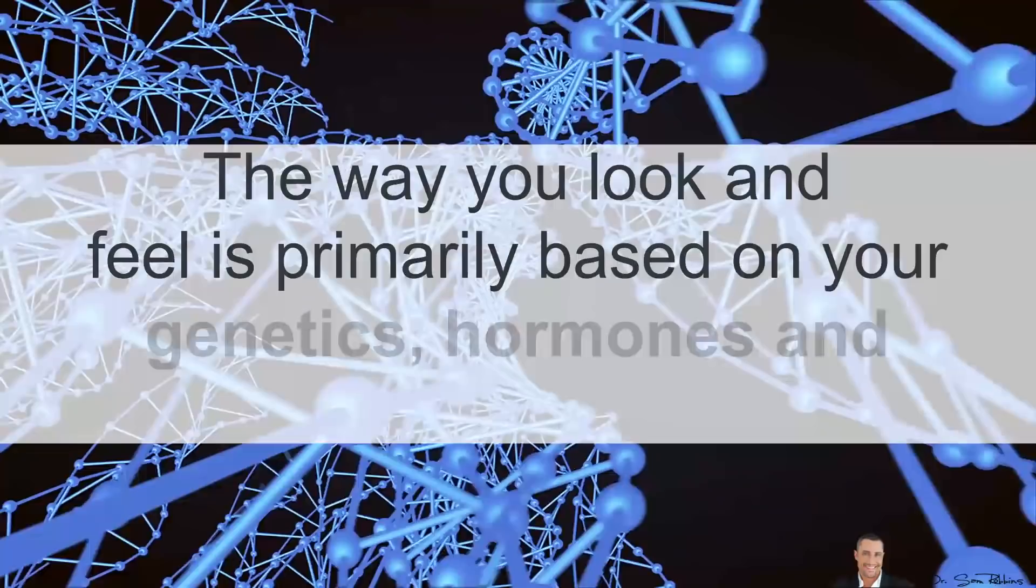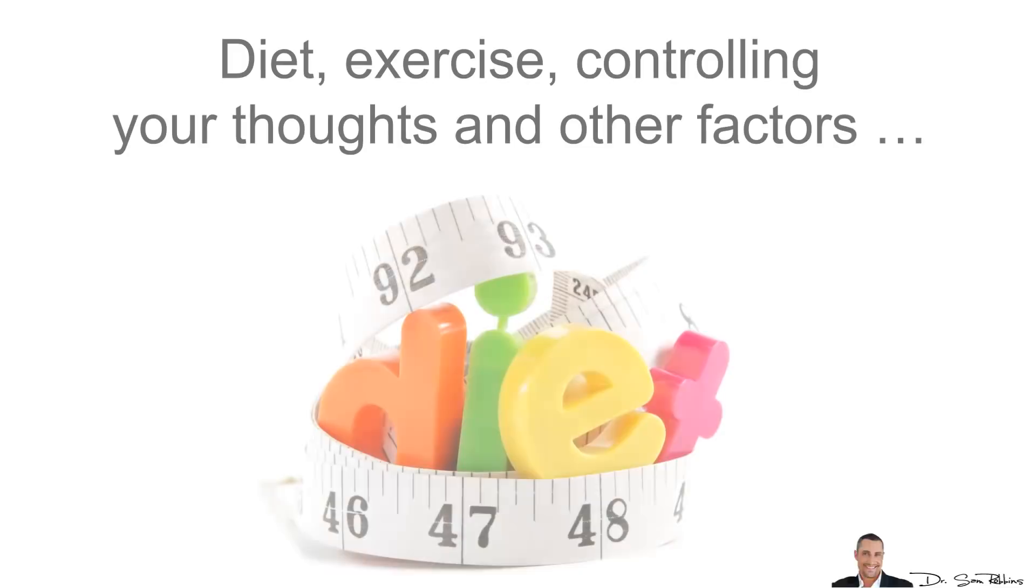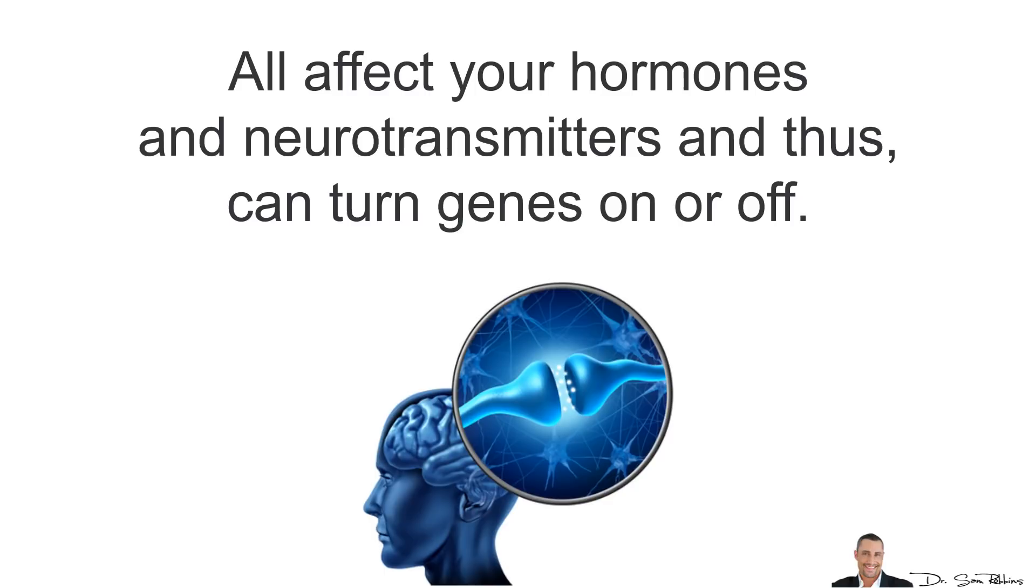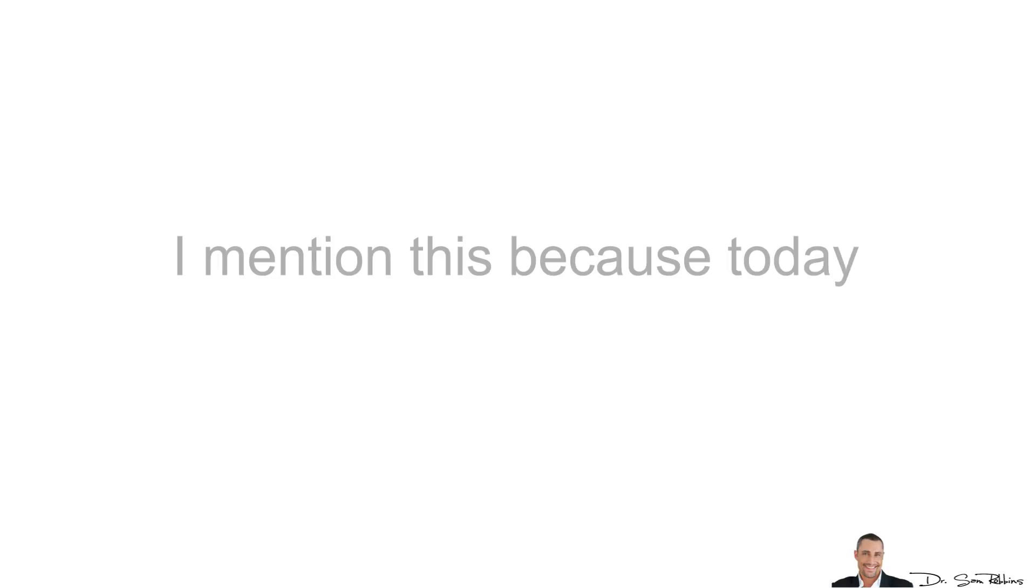The way you look and feel is primarily based on your genetics, hormones and neurotransmitters. Things like diet, exercise, controlling your thoughts and other factors all affect your hormones and neurotransmitters and thus can turn genes on or off.